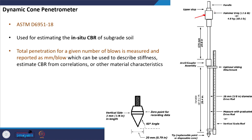In the DCP test, the standard load used for penetrating the cone into the surface of the soil is 8 kg. We hold the handle and manually lift this load and allow a free drop. The standard drop height is 575 mm.